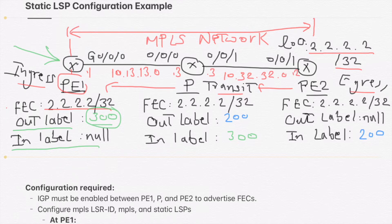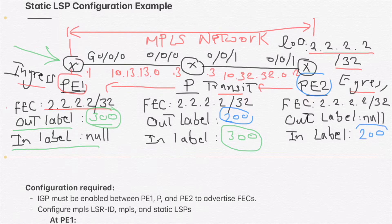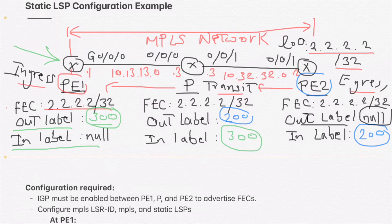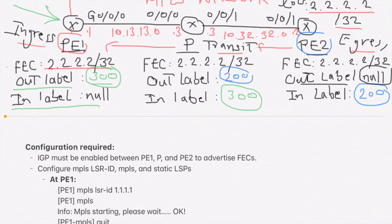The transit router will have this network with in label 300 and out label 200, to send the traffic dedicated to this network with out label 200 towards the egress router. Finally, at the egress router, in label is 200 and out label is null, because this is the last point in the MPLS network. PE2 router is directly connected to this network, which is outside the MPLS domain, so the traffic will be sent without a label — this is why the out label is null.